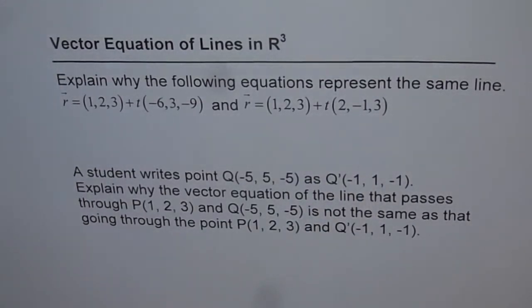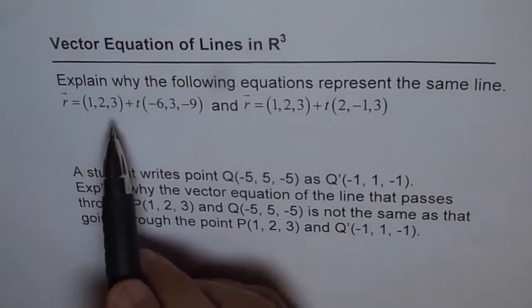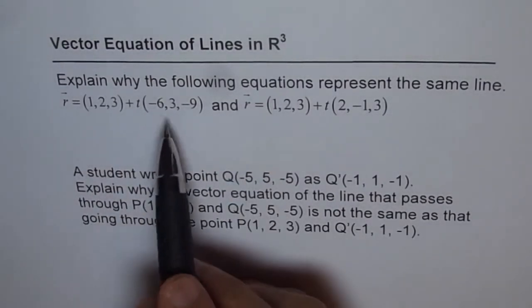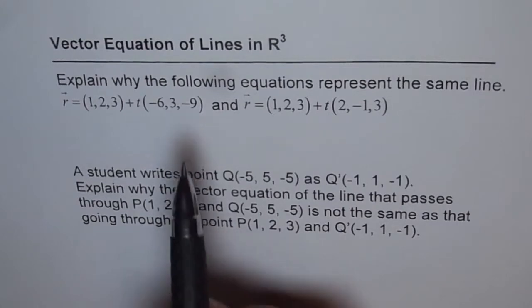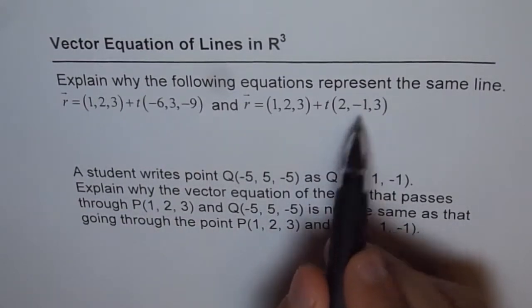Now do they represent same lines? They are going through the same point and the direction numbers are given as (-6, 3, -9). Here it is (2, -1, 3).